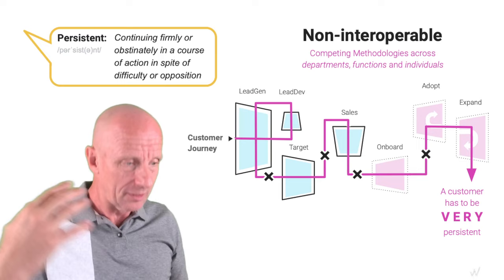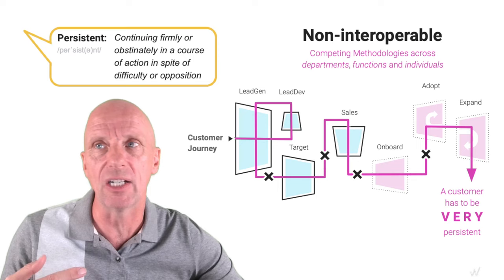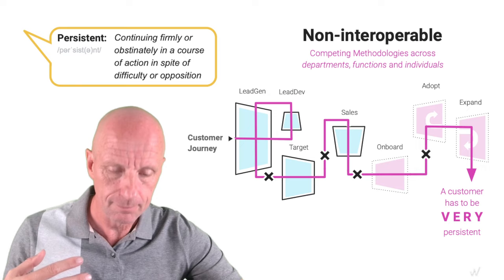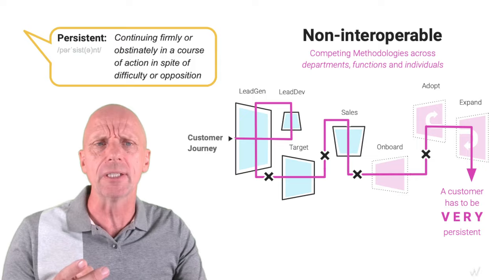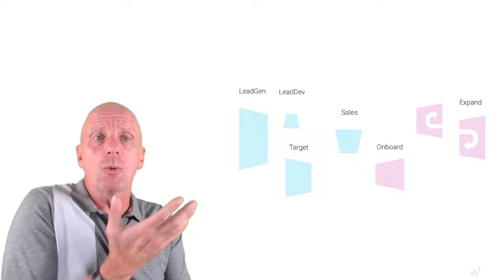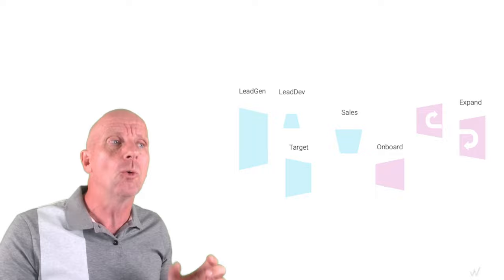I called up Siri to define "persistent": "Continuing firmly or obstinately in a course of action in spite of difficulty or opposition." That's a pretty accurate description of what a customer has to go through. They have to be really persistent — and that is unfortunate because recurring revenue is what we all want to achieve.